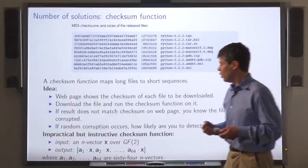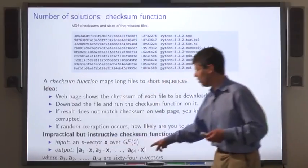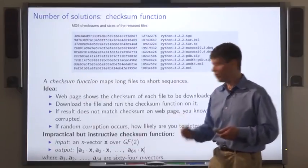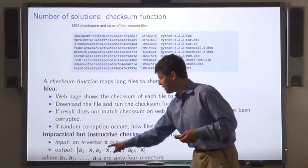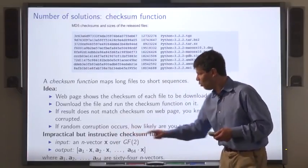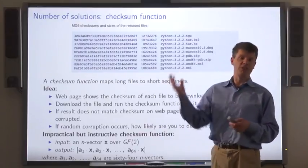And the function will be a 64 vector over GF2, where the first entry is a1 dot x, the second entry is a2 dot x, and so on, where a1 through a64 are vectors we chose somehow.